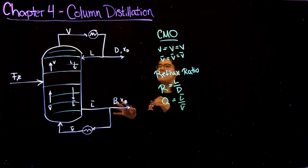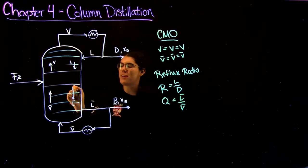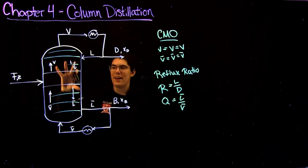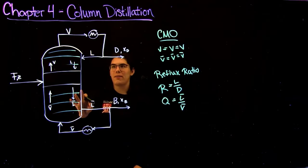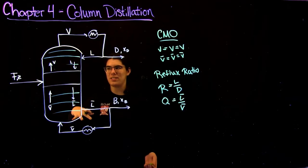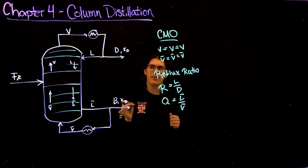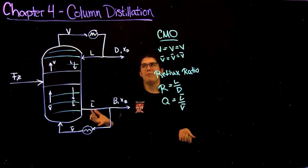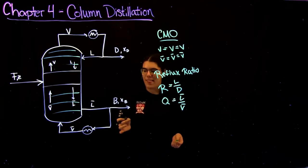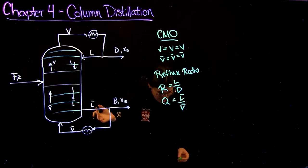Another definition is in terms of the condenser and reboiler. You have different stages within your column, and usually the goal of questions is to find out how many stages you need. When you have a partial reboiler or a partial condenser, that actually counts as another stage, because being partial it also creates some separation into liquid and vapor phases. So when a question says you have a partial reboiler or partial condenser, there's nothing mathematically different — theoretically it just counts as another stage in your column.